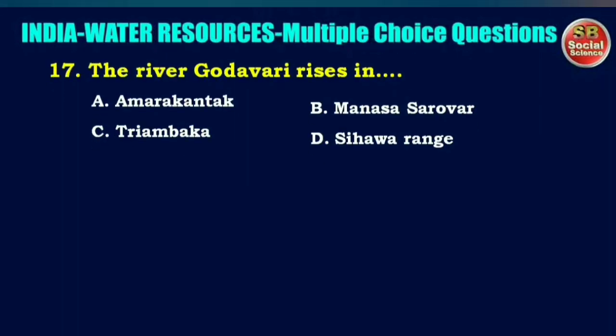The river Godavari rises in — options are Amarkantak, Manasa Sarovar, Tryambaka, or Sihavar Range. The right answer is option C: Tryambaka.